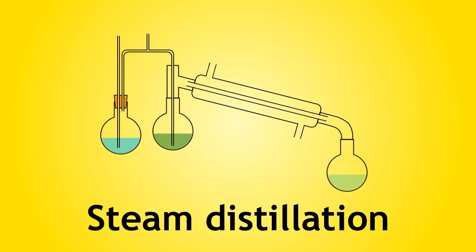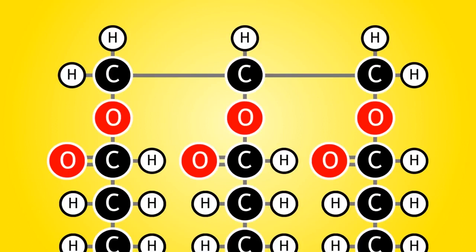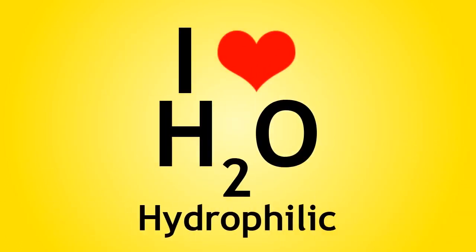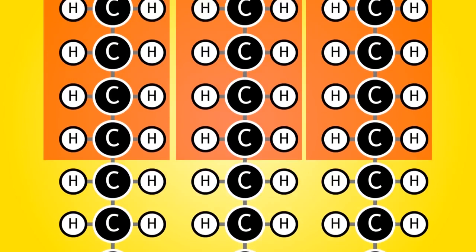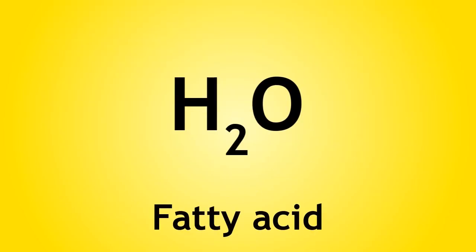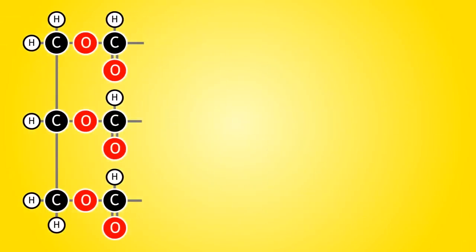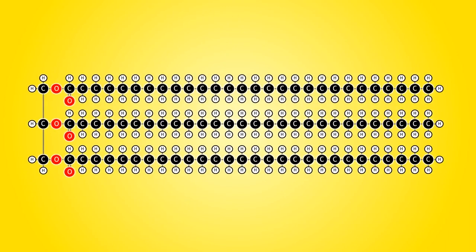We will now look at the general structure of plant oils. The structure can be broken down into two parts. First, we have the glycerol head, which is hydrophilic or water-loving. This head is made of three carbons. These three carbons are each attached to three fatty acid tails, which are hydrophobic or water-fearing. The length of the tail can vary from oil to oil, anywhere from 4 carbons long to 28 carbons long.